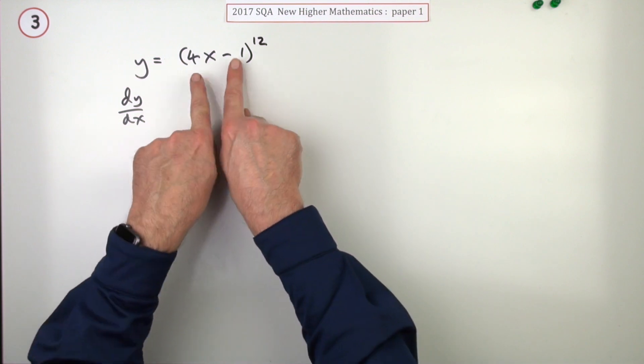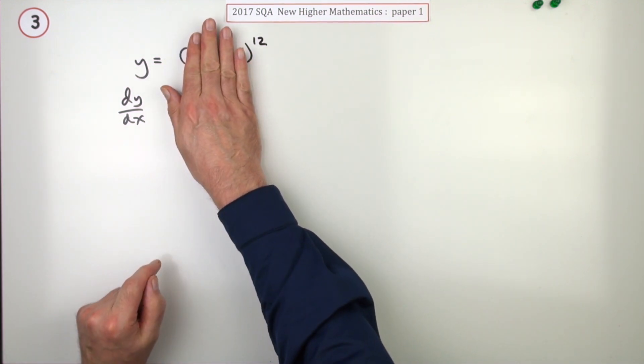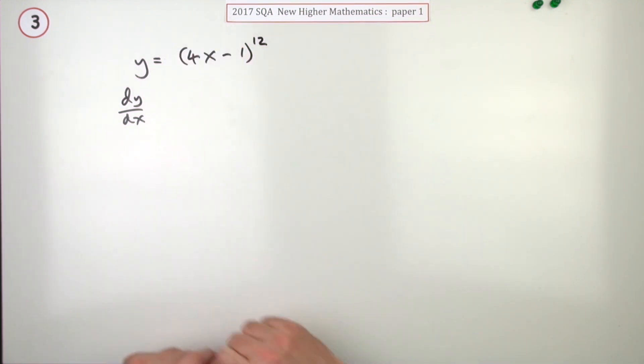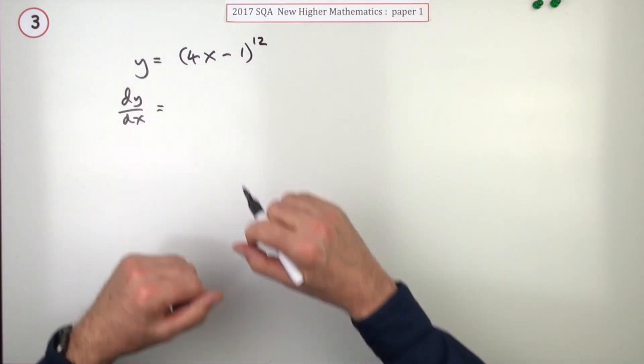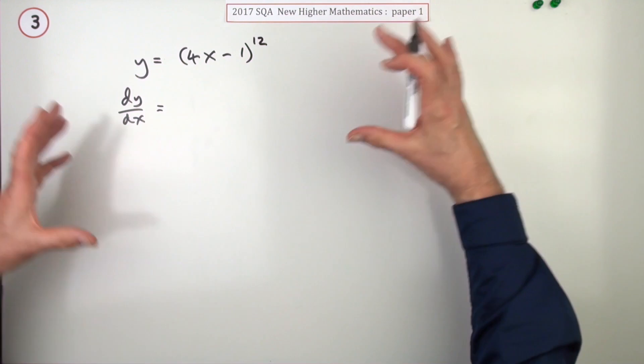It's a function of a function. There's an inner function and there's something happening to that—there's an outer function. And when you differentiate it, you do the outer function first. It's like working in layers, like the layers of an onion.